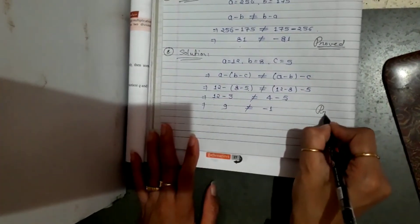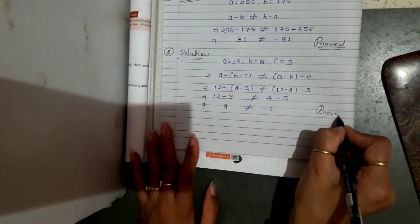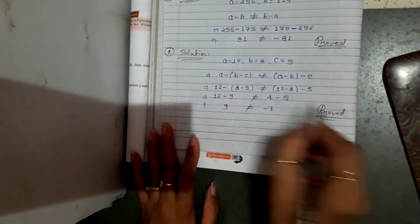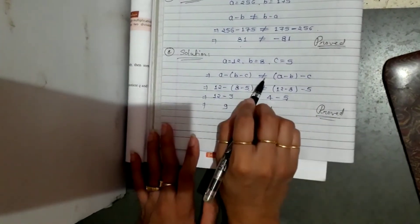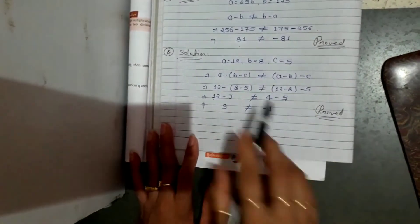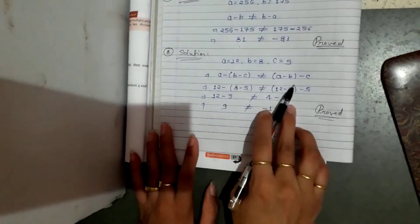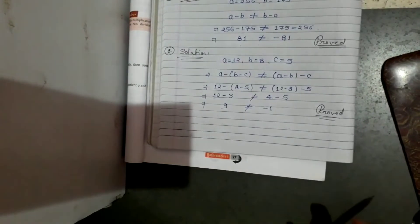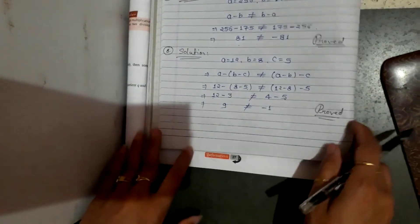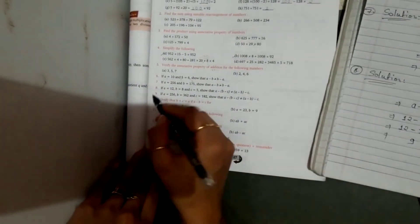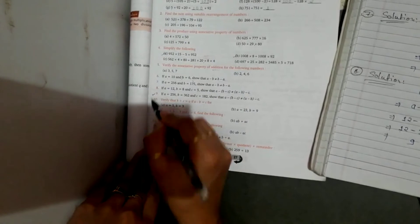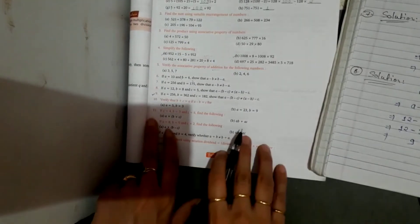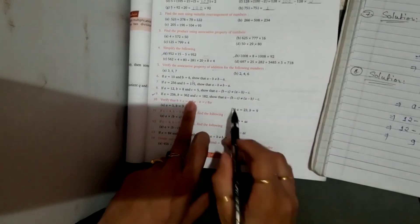If the two sides were equal we would put an equal sign, but since they are not equal we use does not equal. Question 9 is your homework — look at it at home, and if you have doubts you can ask.